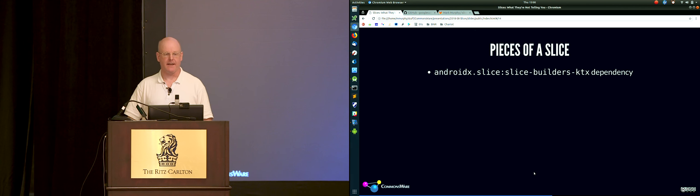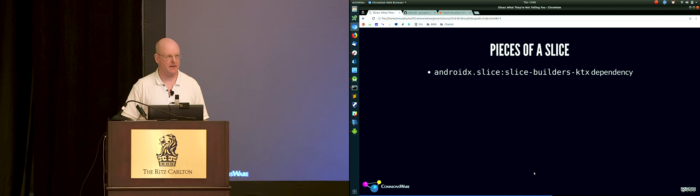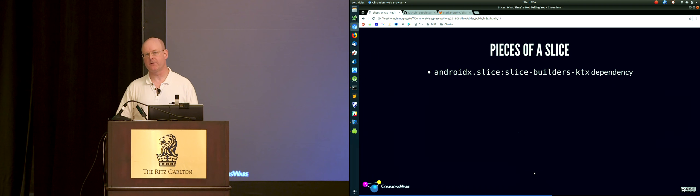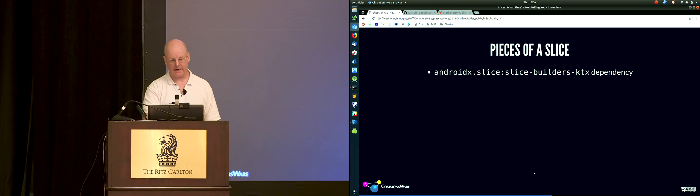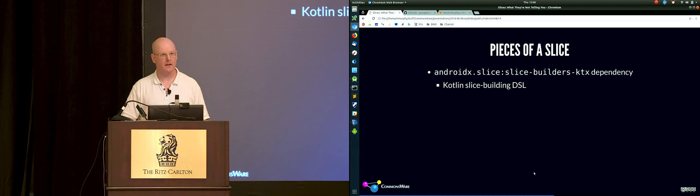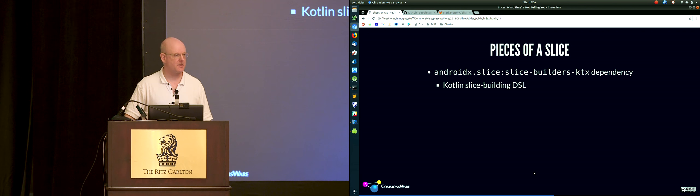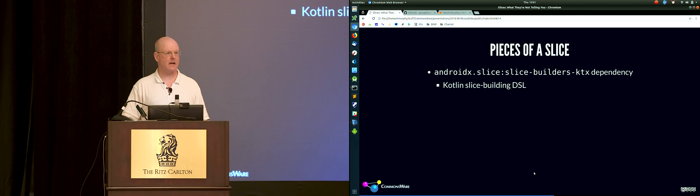To publish a slice, first you need to add some code. There is a Java API for publishing slices — the Google I/O presentations covered that. But since Google I/O, they released a Kotlin-specific library, Slice Builders KTX, which gives us a Kotlin Slice Building domain-specific language (DSL) that makes creating slices fairly trivial. Not everybody has climbed Mount Kotlin yet, so you're welcome to use the Java API — it's not that bad, but it is Java and will be more verbose.